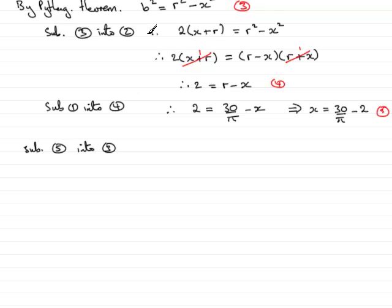We have that b squared equals r squared, which we said was 30 over pi, got that squared, minus x squared, so we've got this value here, minus 30 over pi minus 2, all squared.